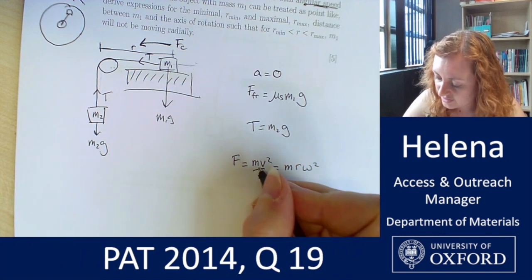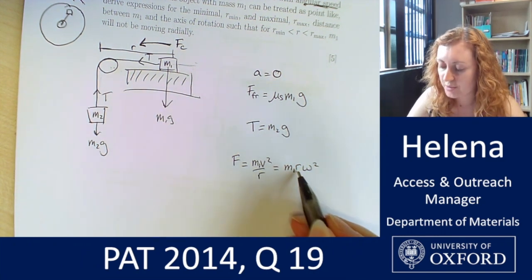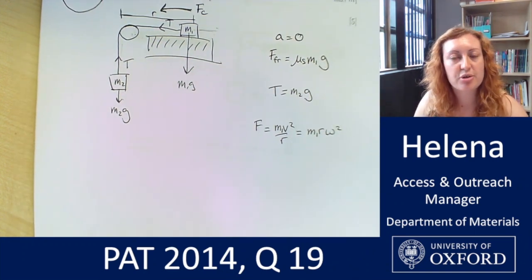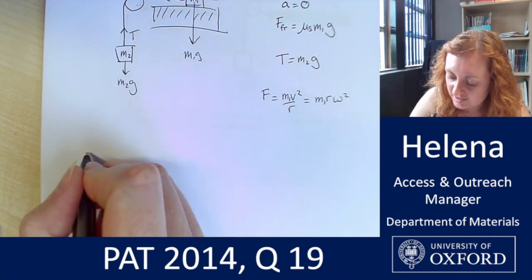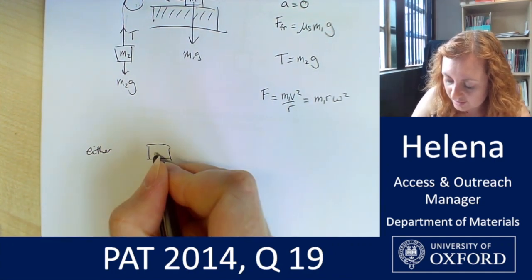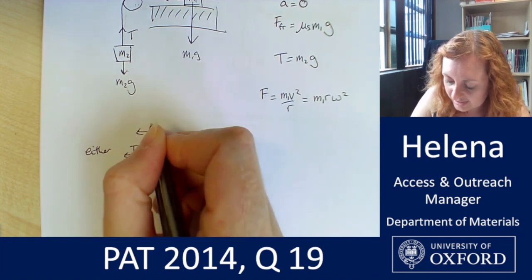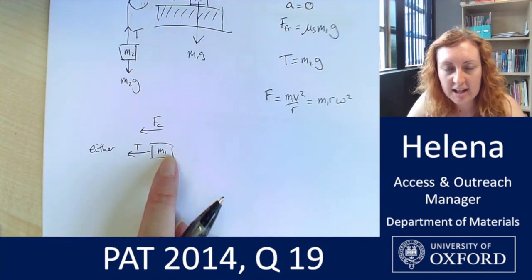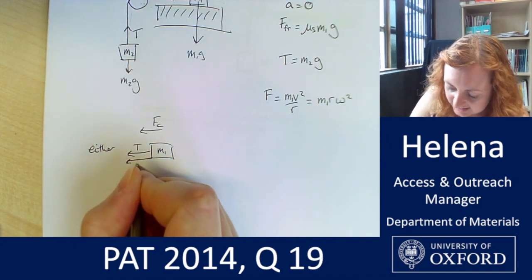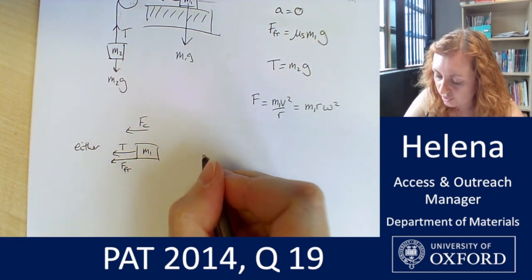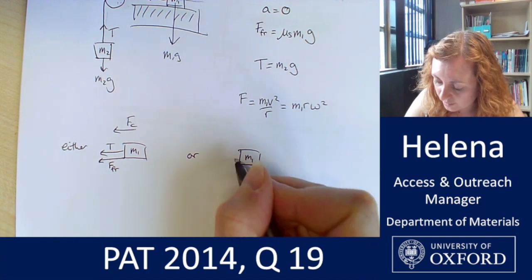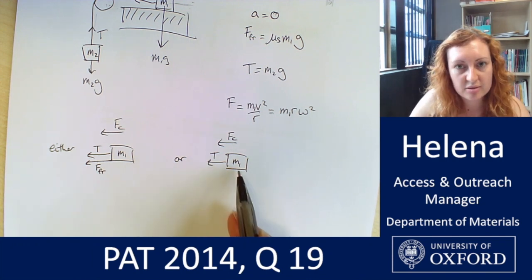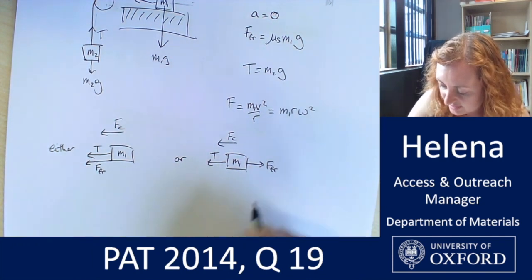This is acting on block one, so we've got our m1 here, and then we're going to be wanting to find these two different extreme values for r. So let's redraw the forces on block one in those two different scenarios. So we're either going to have our block m1 with our tension here, our net force due to the circular motion here. We're either going to have it wanting to move away from the hole, which means that our friction is acting in this way, or we have our block m1 with our tension and our net force here, wanting to move towards the hole, which means that our frictional force is going to be acting in this direction.